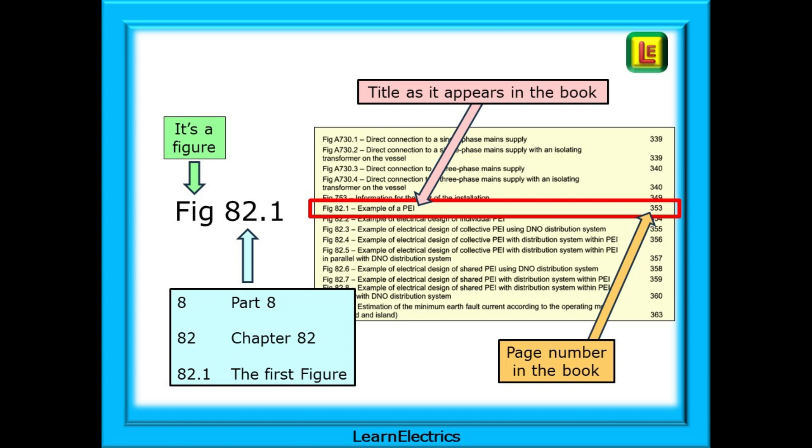The letters FIG are telling us it is a figure, a drawing or similar. And the 82.1 can be broken down as follows. The first number, the 8, tells us that this figure is in part 8 of the book. Then we have a 2, making 82, so it is in chapter 82. Then we have .1, indicating it is the first figure to be found in chapter 82.